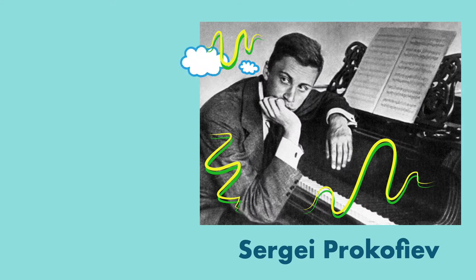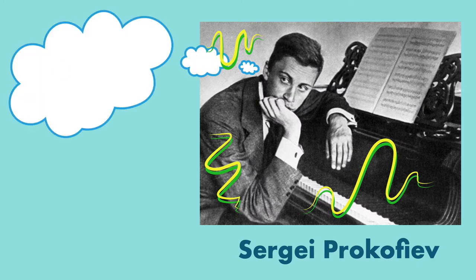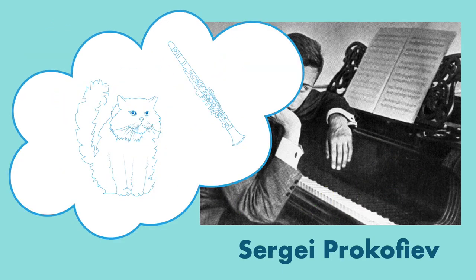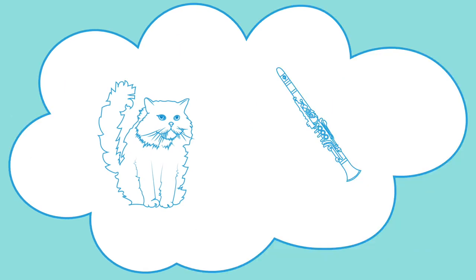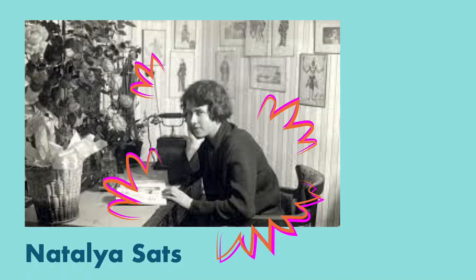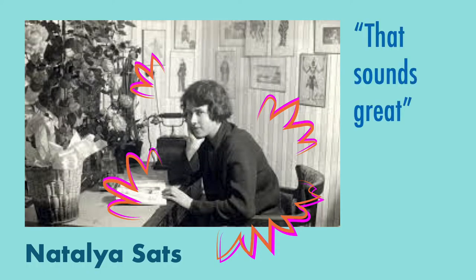And so Sergei starts thinking, how can I help children learn about different instruments? And then he gets an idea. He thinks, what if we take every instrument in the orchestra and make it a character in a story? The clarinet could be a cat, and the French horn could be a wolf, and the violin could be a little boy named Peter. He tells Natalia his idea, and she says, that sounds great.